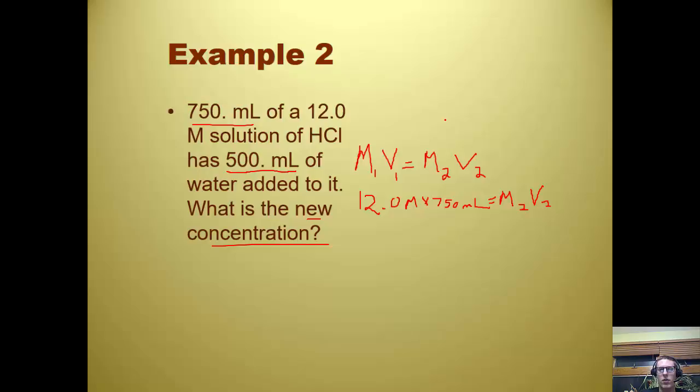So we're going to say 750 plus 500 milliliters. That gives us 1250. Equals M2, and our V2 is 1250 mL. Now, we're solving for M2.